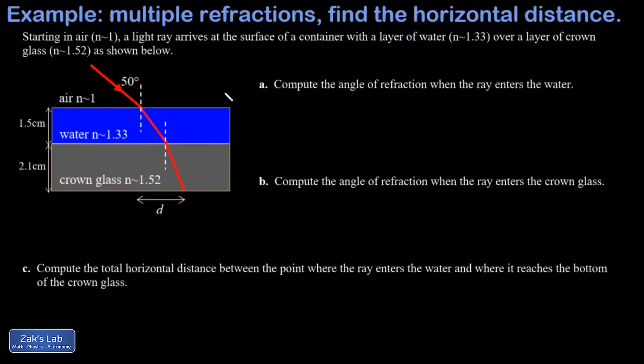In this video we're looking at a light ray that undergoes multiple refractions as it transitions from air to water and then water to crown glass. In parts a and b of the problem we want to find the refracted angles at each of those steps, and then in part c we're looking for the total horizontal distance traveled by the ray from the point where it enters the water to the point where it exits the crown glass.